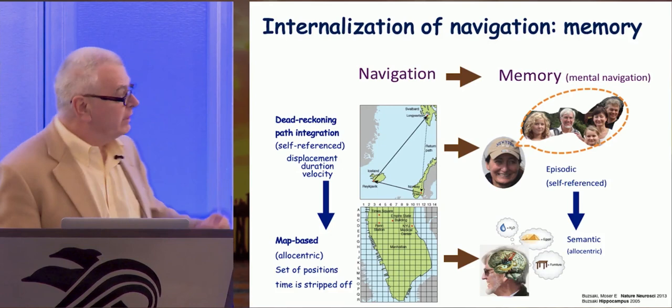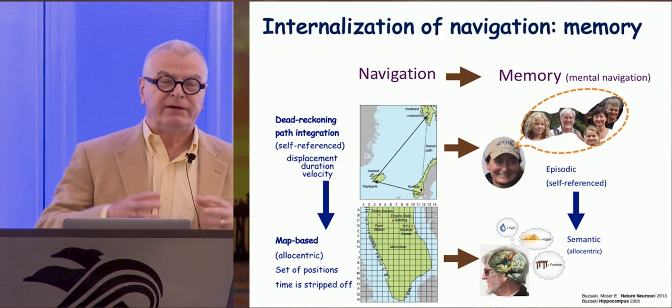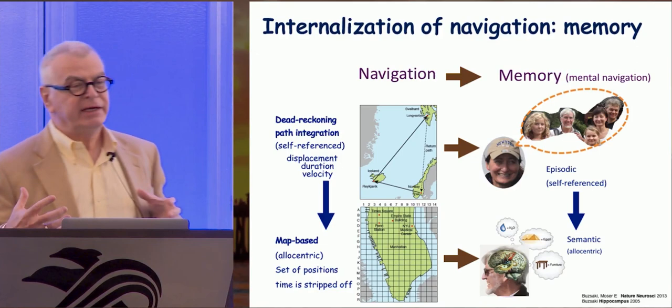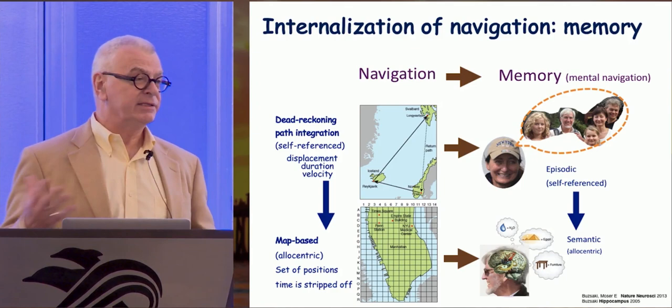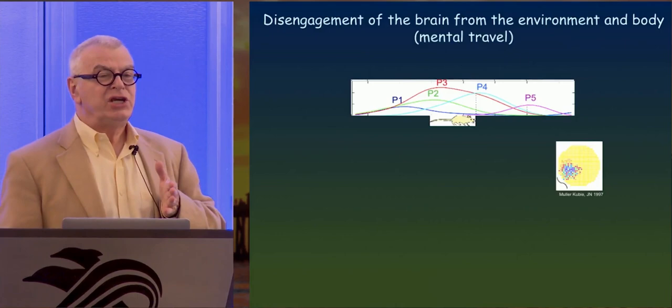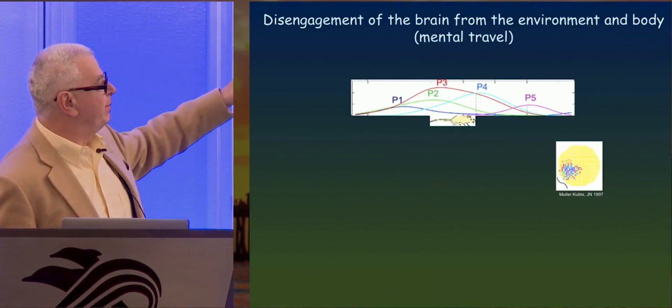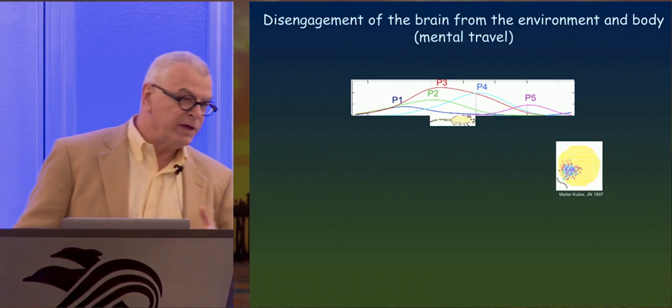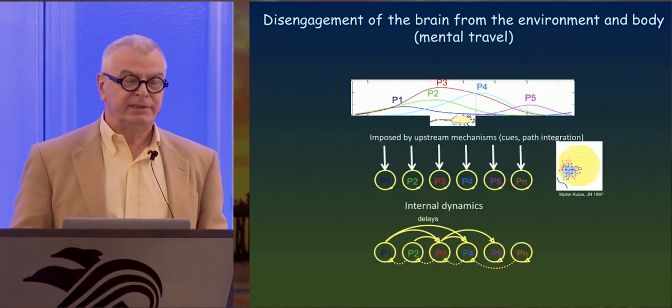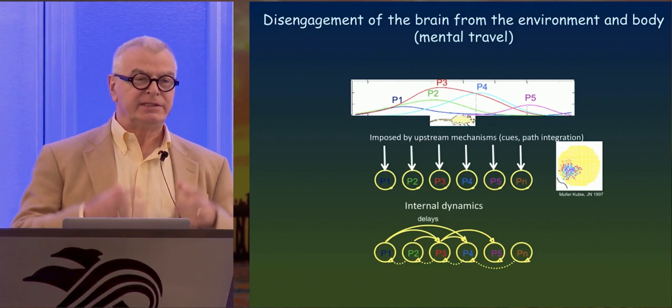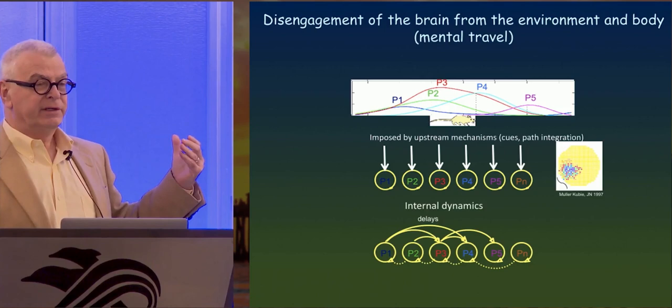The hippocampus doesn't really calculate space or memory. It just does one kind of computation. What the right side requires is a self-organized mechanism that allows one assembly to drive the next assembly. The issue is what is change. How is change brought about in the brain? There is a self-organized system. The hippocampus just can't help, all it does is generate sequences.